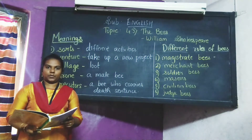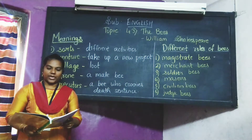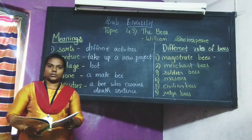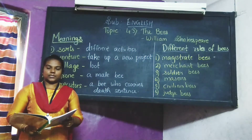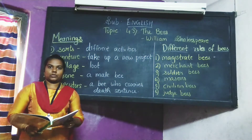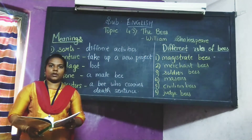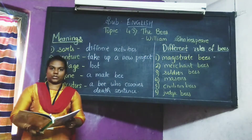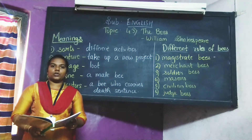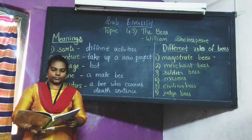Now let us understand the poem. In the opening lines — 'So work the honeybees, creatures that by rule in nature teach the art of order to a people's kingdom' — William Shakespeare tells us that the bees teach the order of life to us human beings. The bees, though they are small insects, are giving us meaningful information about how to live an organized life.